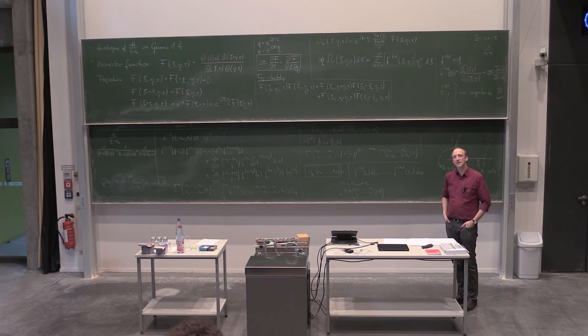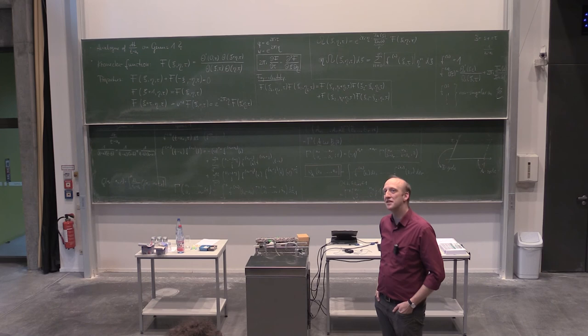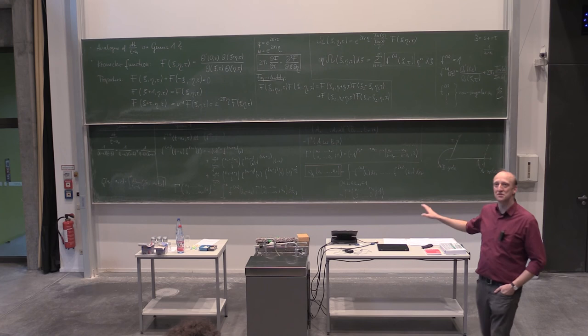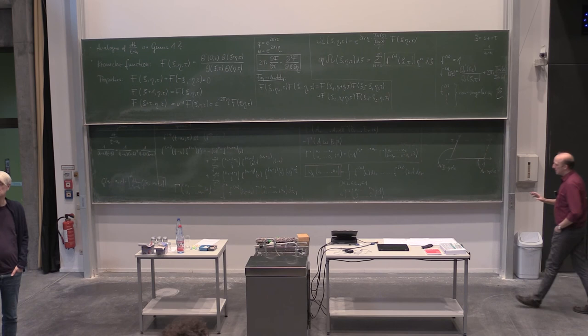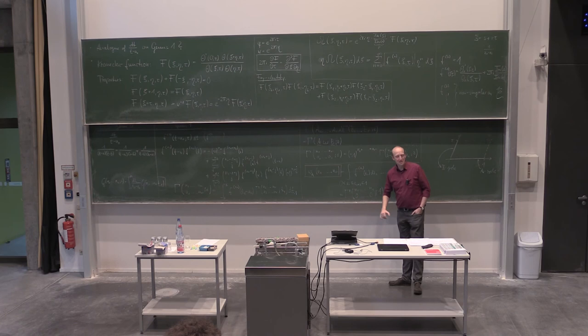Thank you. So in genus 0 there was an exception because you have to define G₀ to be log x because dt over t doesn't converge at t equals 0. There must be the same thing going on here. Yes — that is going to happen here, so you have to think about how to regularize these integrals. The short answer is, with the same line of thinking as genus 0, you can come up with something called tangential base point regularization.